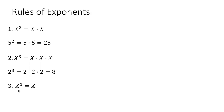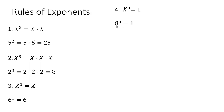Another rule: x raised to the power of 1 is just simply written as x — these are equivalent. So 6 raised to the power of 1 is just 6. Moving on to rule 4: x raised to the power of 0 is 1. So 8 raised to the power of 0 would just be 1.